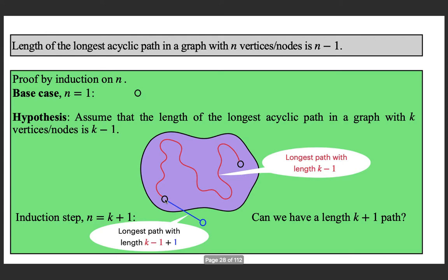Are we done? We got a path of length k, but the question is: can we have a length k plus 1 path? If we can add one more edge like this, then the statement would not be correct. The length would be k minus 1 plus 1 plus 1, which is k plus 1. Is it possible? This is not an easy question to answer. The answer is no — you cannot have this edge, because we can prove that adding this edge would create a cycle.